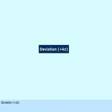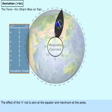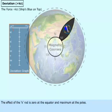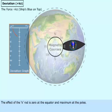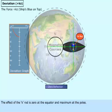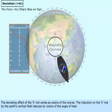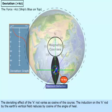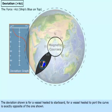Deviation positive Kz. The effect of the K-rod is zero at the equator and maximum at the poles. The deviating effect of the K-rod varies as cosine of the course. The induction on the K-rod by the Earth's vertical field reduces by cosine of the angle of heel. The deviation shown is for a vessel heeled to starboard. For a vessel heeled to port, the curve is exactly opposite of the one shown.